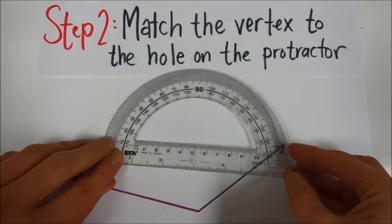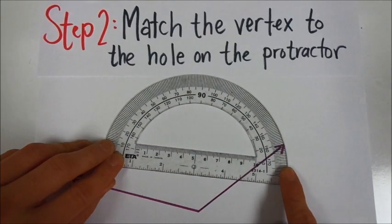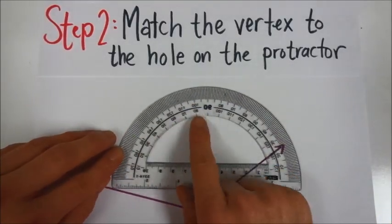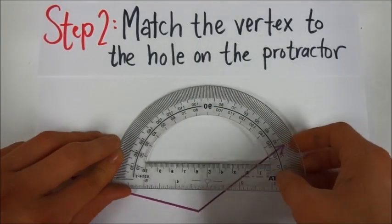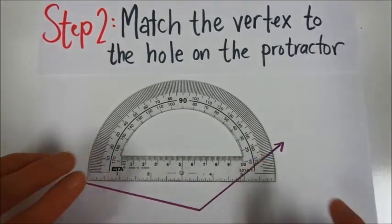Now also, you want to make sure that the numbers on your protractor are reading in the right direction. If you lay your protractor down and all your numbers are backwards, then you want to make sure you flip it over so that you're reading the numbers the correct way.